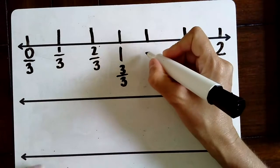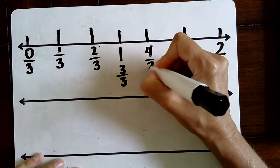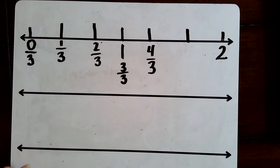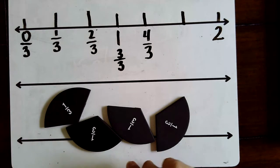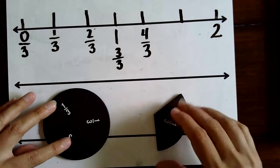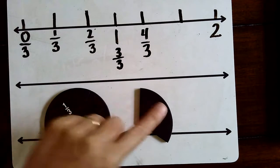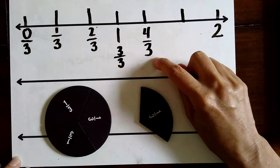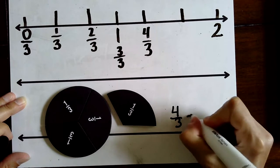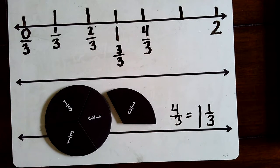Let's keep going. After three thirds, I have four thirds. Let's look at our circle fractions and see what four thirds would look like. Here I have four thirds — I'm going to slide them together. What do we notice about four thirds? Four thirds is equal to one whole and one third. So, another way to say four thirds is one and one third, because we made a whole with one left over. That's the same as four thirds.